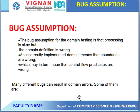Bug Assumptions: The assumption is different and the real-time output is also different. The bug assumption for domain testing is that processing is okay, but the domain definition is wrong. An incorrectly implemented domain means that boundaries are wrong, which may in turn mean that control flow predicates are wrong. Many different types of bugs can be resolved as domain errors.